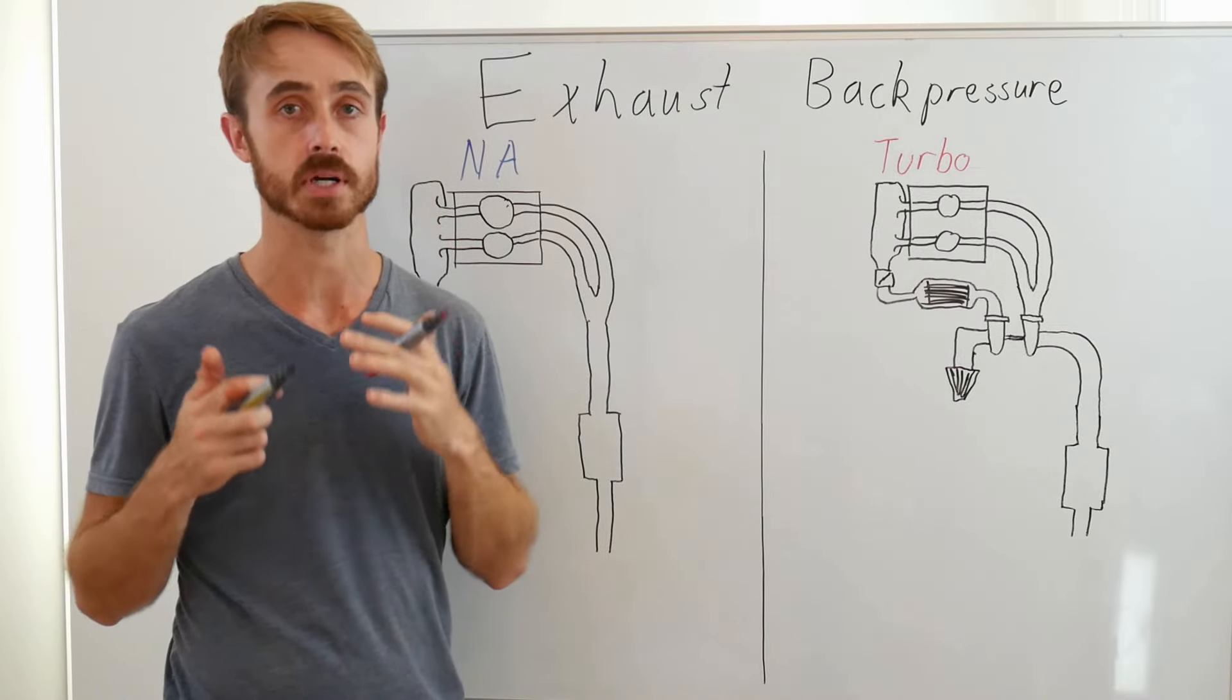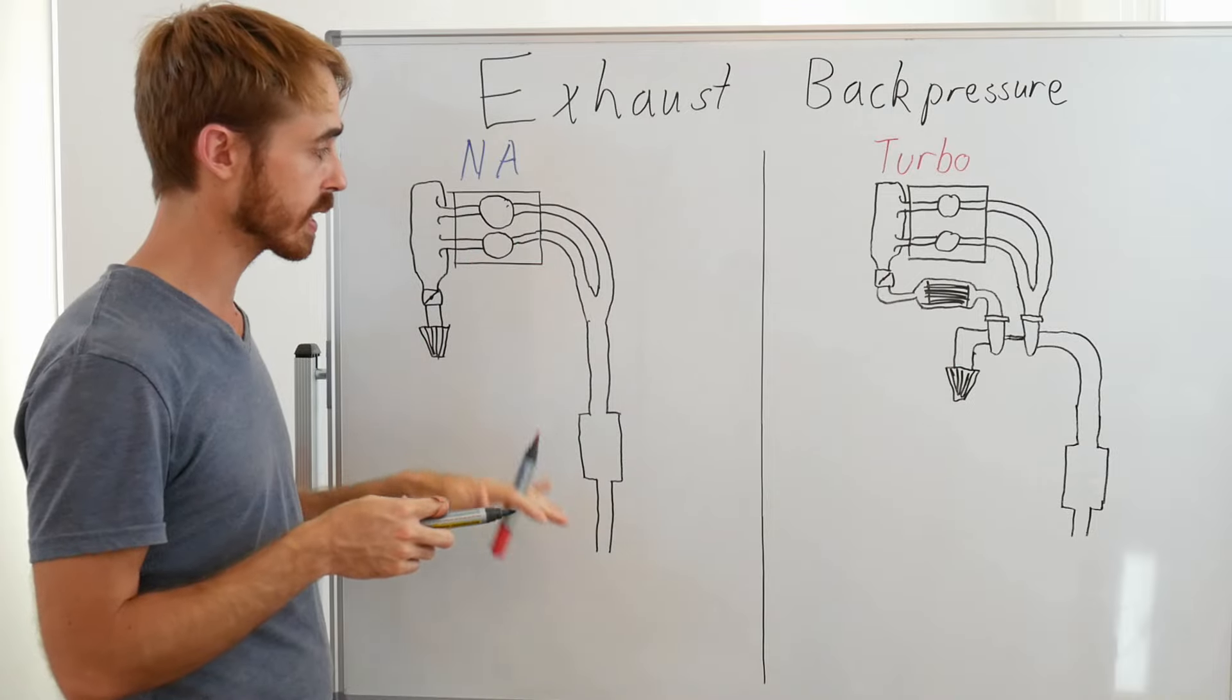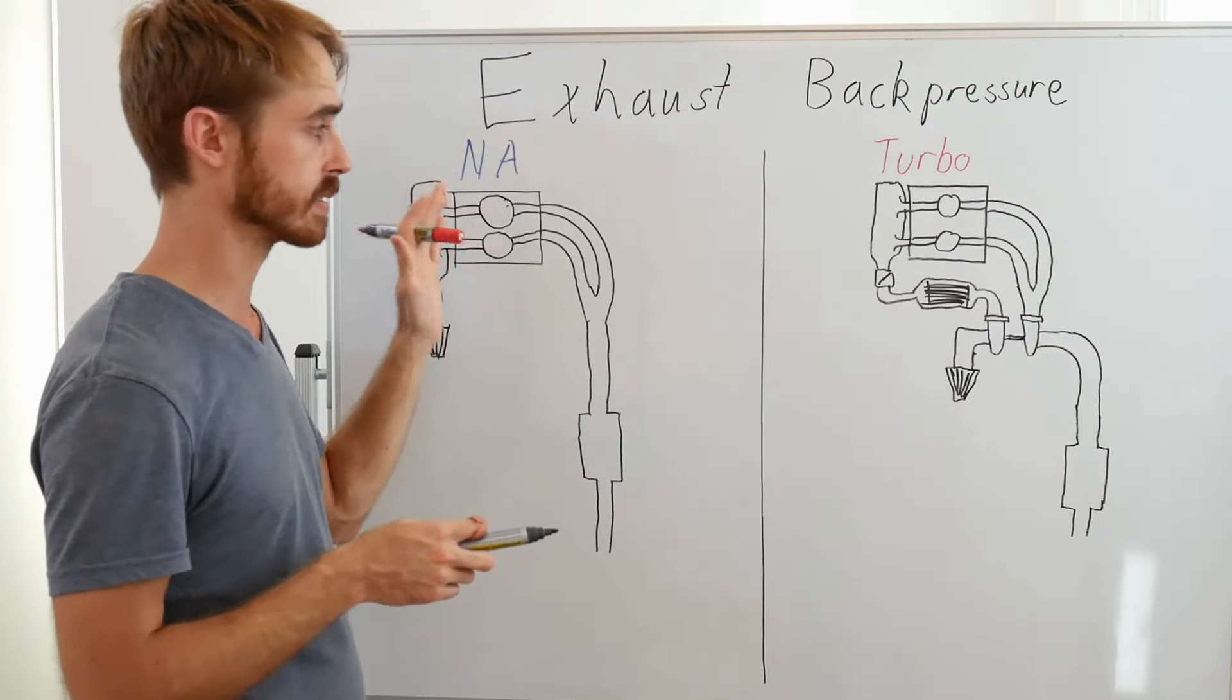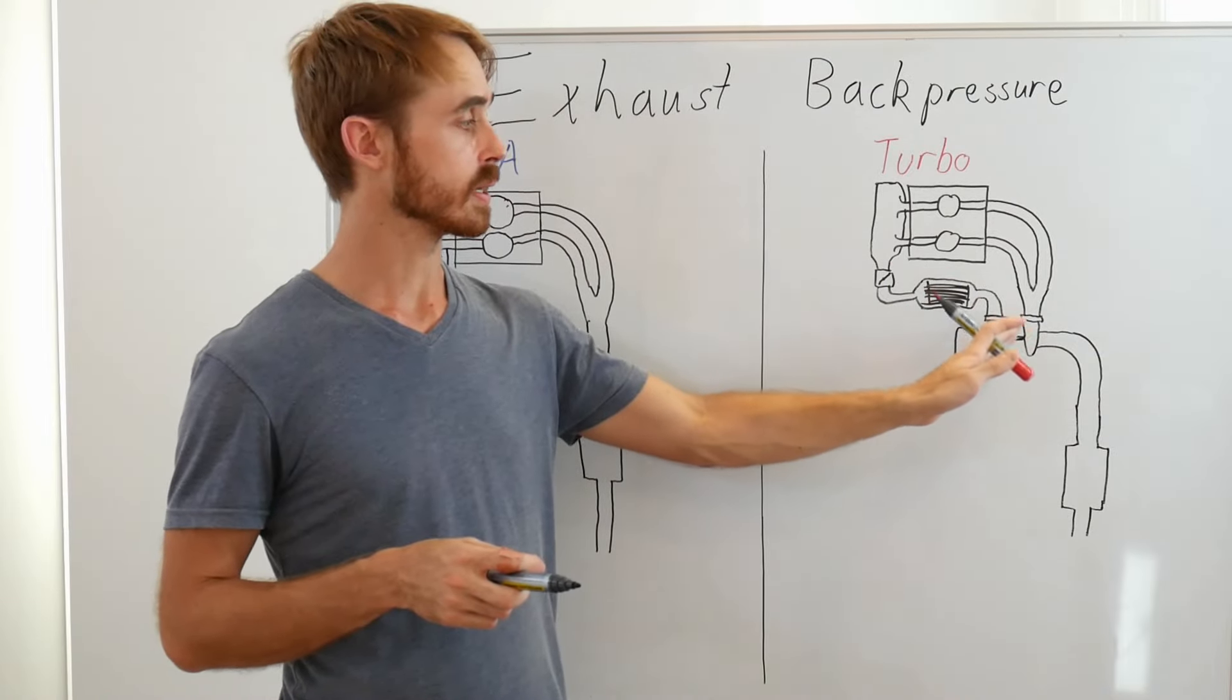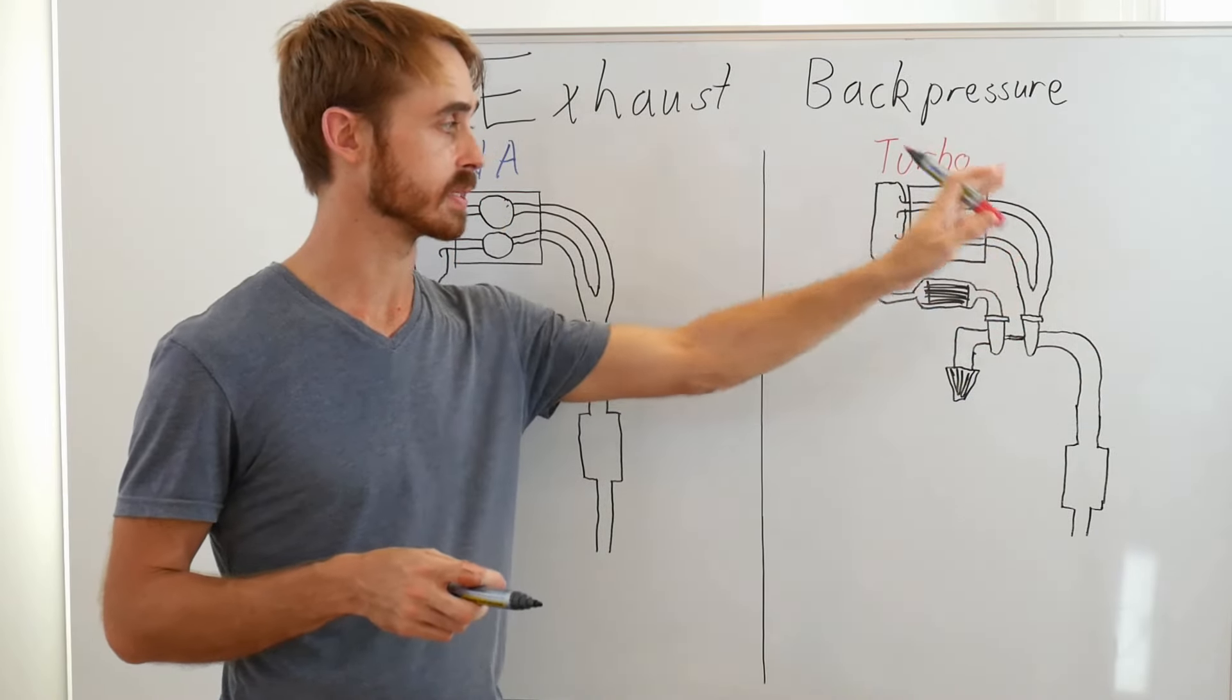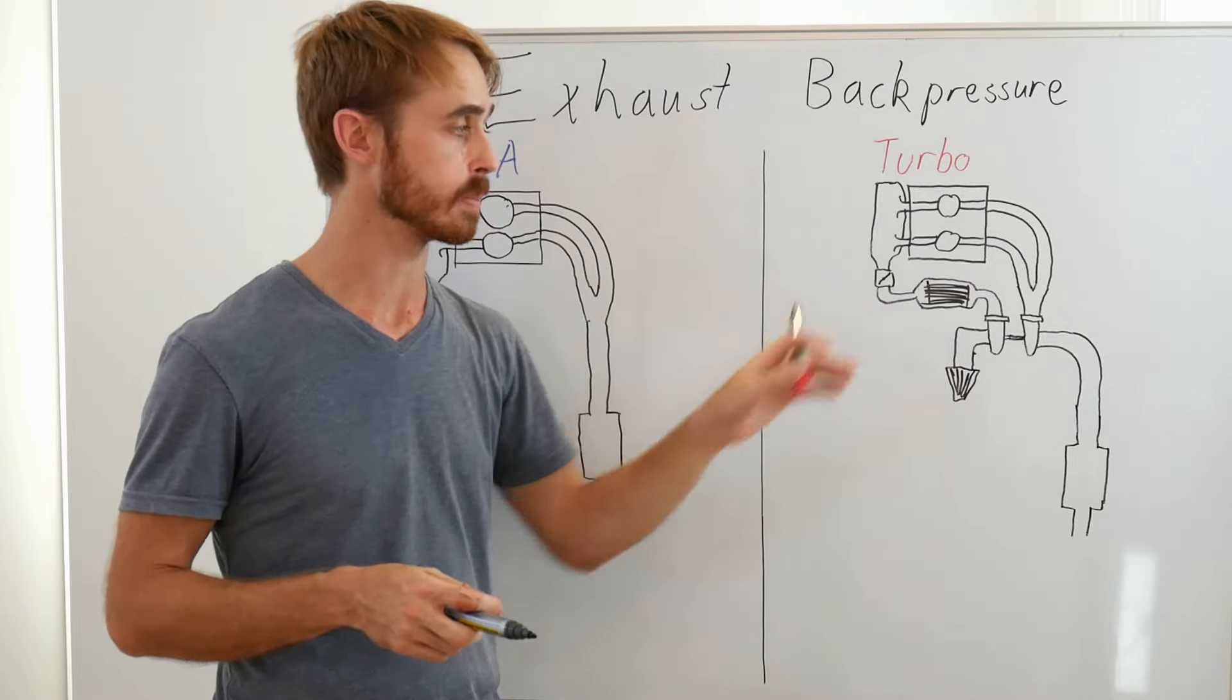Now there's two main types of back pressure that we need to consider. One is in the naturally aspirated case where we have our back pressure just going down to the cylinder, and the other one is in the turbo case where there's two different back pressures. One is the back pressure going to the cylinders and one is the back pressure going to the turbo, so the post-turbine pressure.